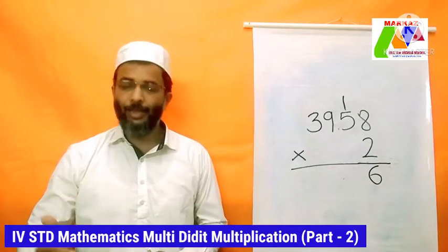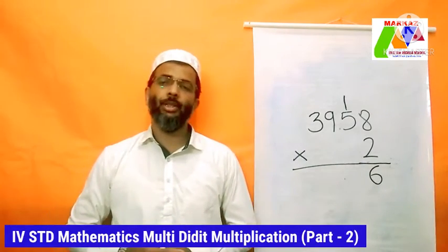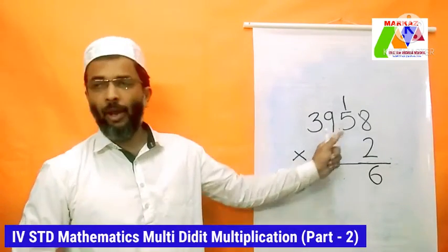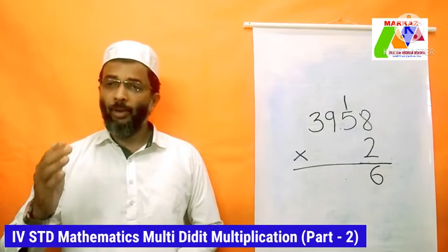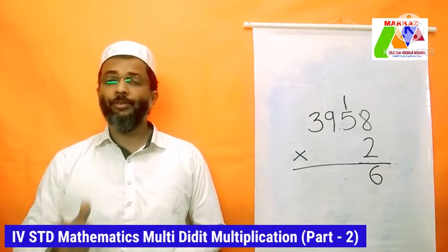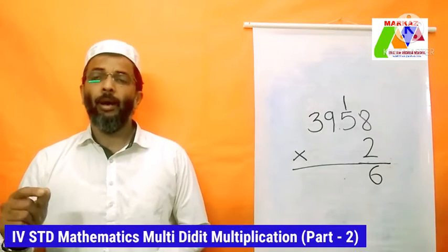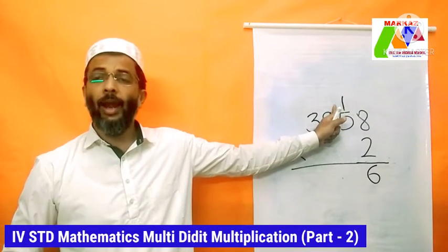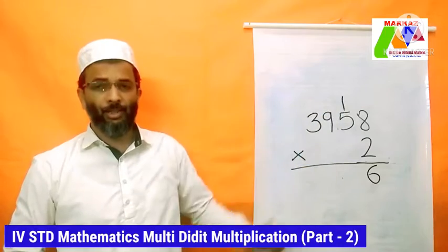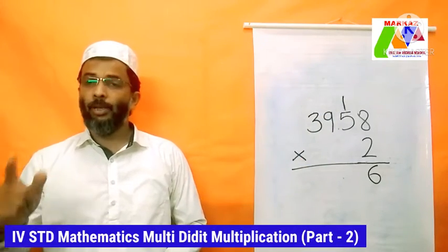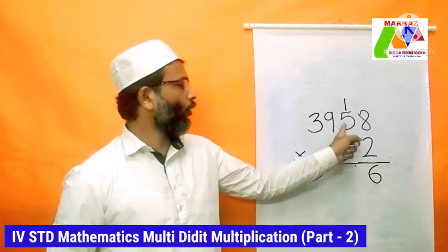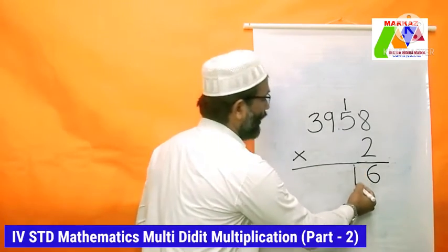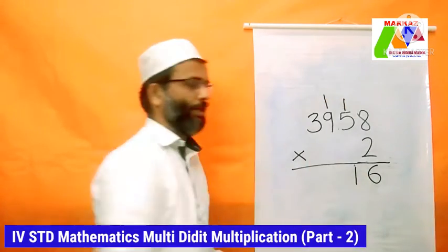Now we do the second step: multiply the bottom digit by the next digit in the top number. 2 × 5 = 10. But don't forget about the carried 1 — we need to add that to our answer: 10 + 1 = 11. Write 1 in the answer line and carry 1 to the next place.